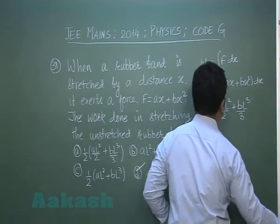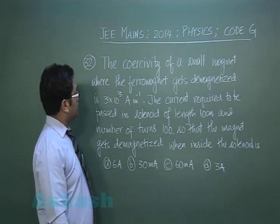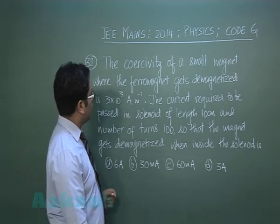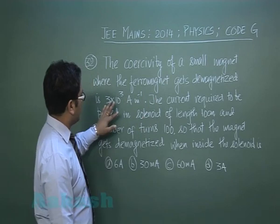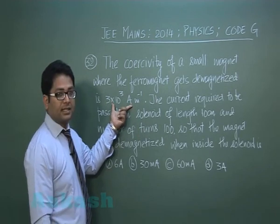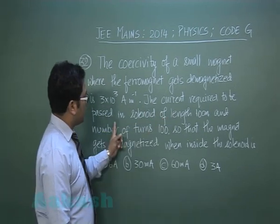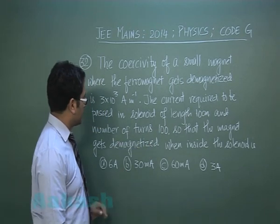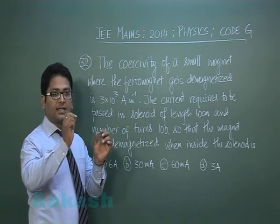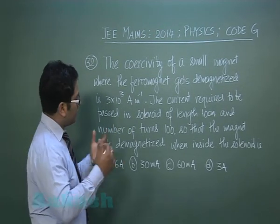Question 32 is from permanent magnets. It says the coercivity of a small magnet where the ferromagnet gets demagnetized is 3 × 10³ ampere per meter — this is H, the magnetic field intensity from the hysteresis loop. We need to find the current required in a solenoid of given length and number of turns so that the magnet gets demagnetized. The permanent magnet is kept inside the solenoid, which produces the magnetizing field.